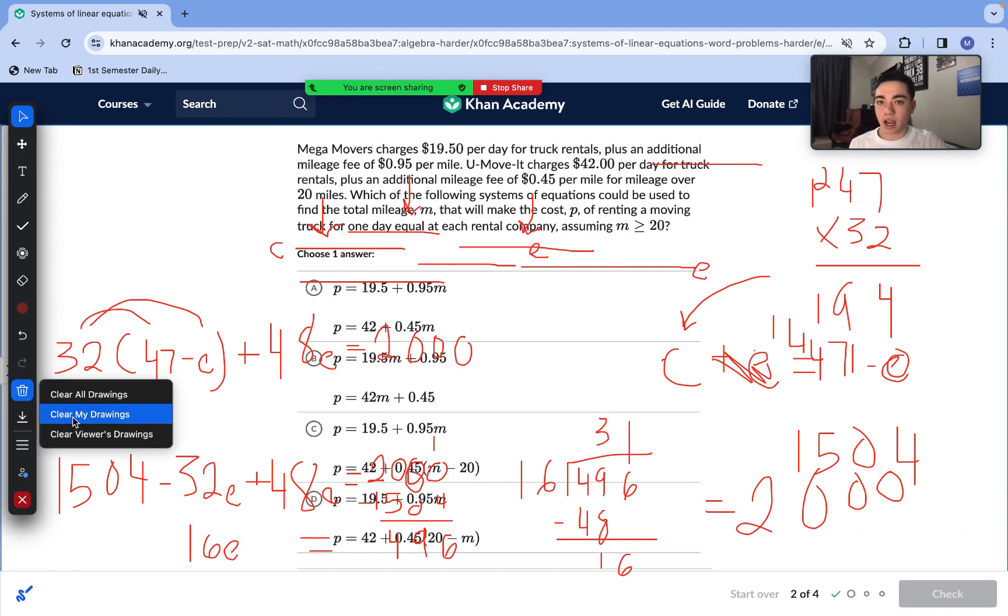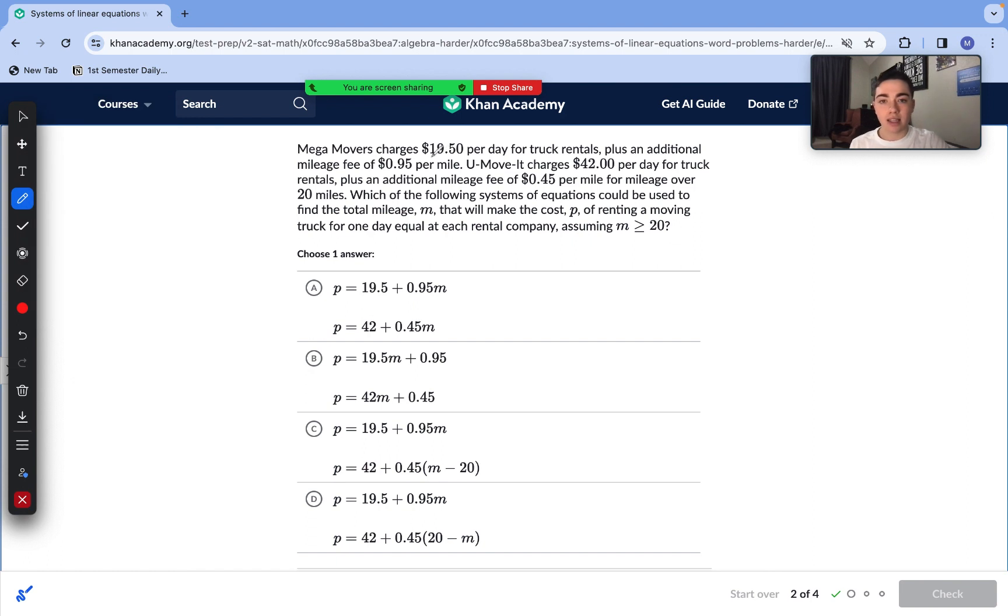On to our next question here. Mega Movers charges $19.5 per day for truck rentals plus an additional mileage fee of 0.95 per mile. You Move It charges $42 per day for truck rentals plus an additional mileage fee of 0.45 cents per mile for mileage over 20 miles. So we need to create one linear equation for Mega Movers and one linear equation for You Move It.